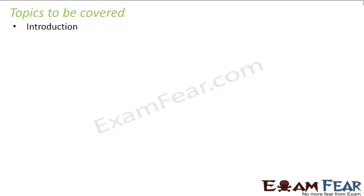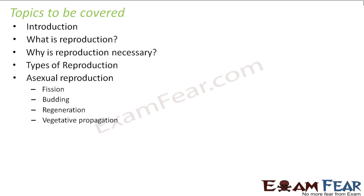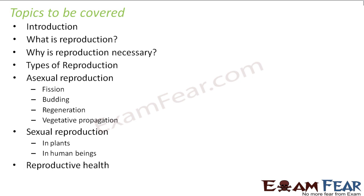Topics to be covered in this lesson are: Introduction — what is reproduction, why is reproduction necessary, and types of reproduction. Under asexual reproduction we will talk about fission, budding, regeneration and vegetative propagation. Under sexual reproduction we will discuss reproduction in plants and in human beings. We will also cover reproductive health and family planning.